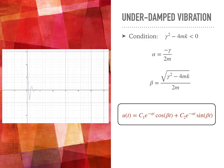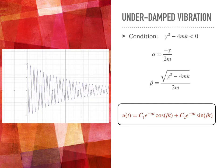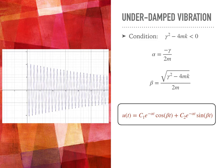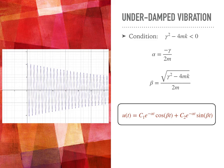Under-damped vibration occurs when you have complex roots for the characteristic polynomial. The solutions involve exponential functions multiplied by cosine and sine. The motion oscillates at first, but the amplitude decreases over time — eventually the motion dies out and the mass reaches the resting position.